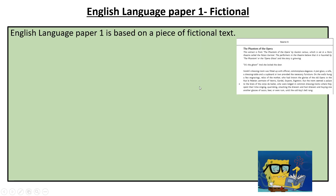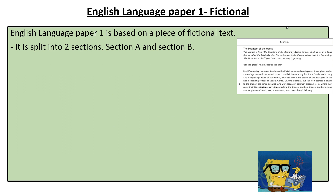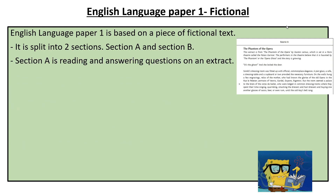Now let's go through each exam as a summary. English Language Paper 1 is based on a fictional text — for example, the Phantom of the Opera, a fictional text — meaning it's made up and you have to answer questions on it. The exam paper is split into two sections: Section A and Section B. Section A is reading the extract and answering questions based on that extract, whereas Section B is a creative writing piece.